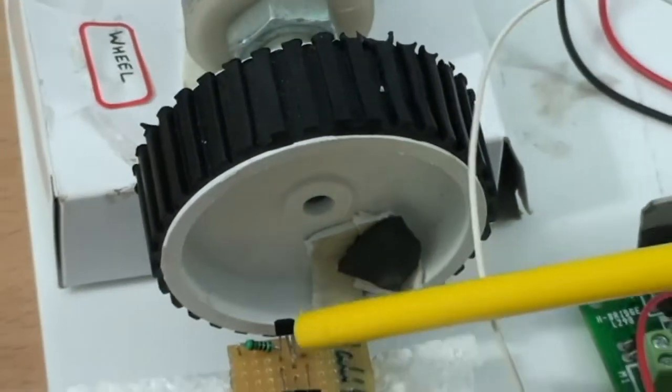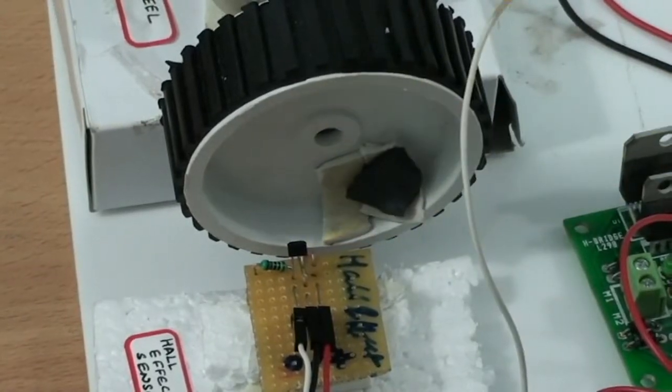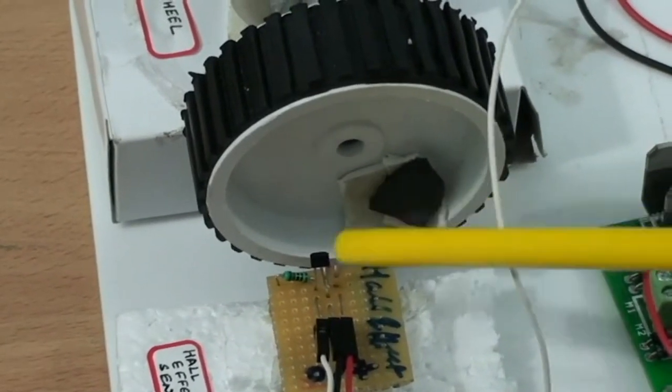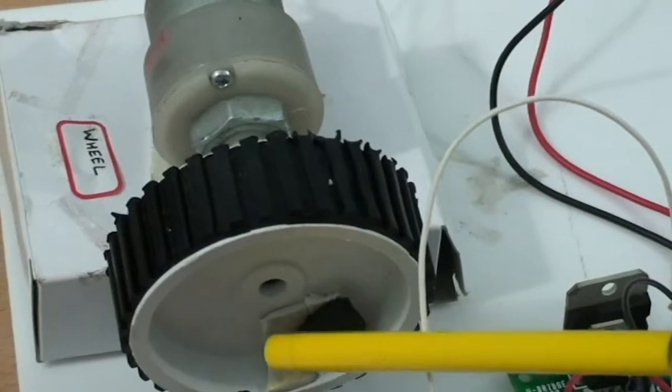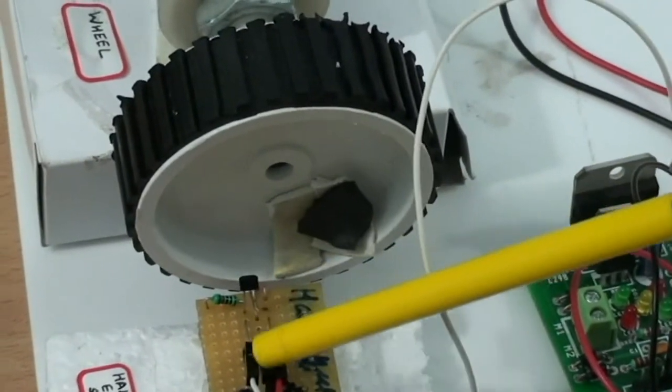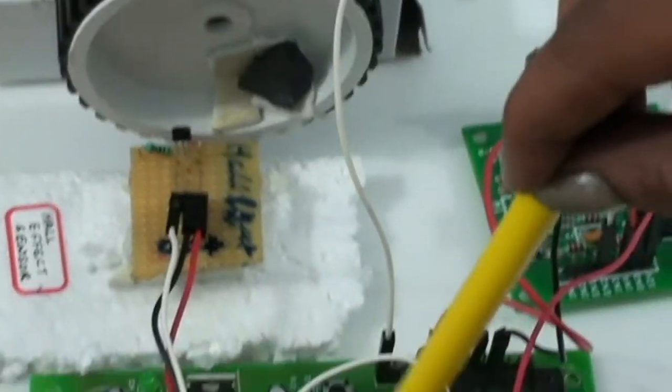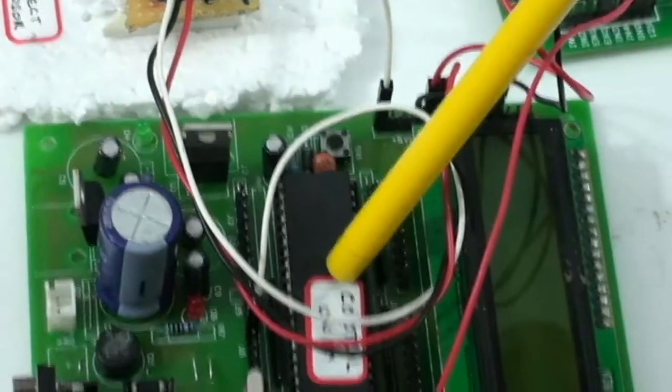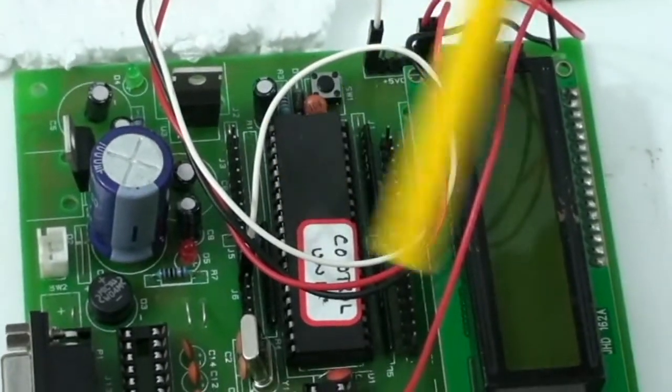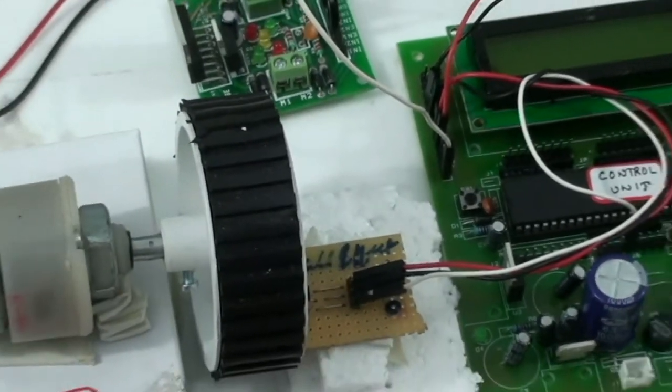Each time when the sensor detects the magnetic field, it varies its voltage. Based on this fluctuation, we will increment the counter. Finally, based on the counter value, we will display it on the LCD through the microcontroller, where you can see on the LCD how much distance is traveled.